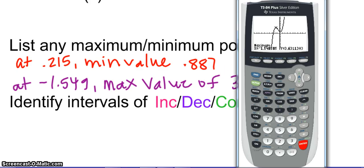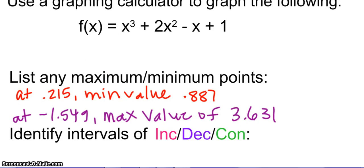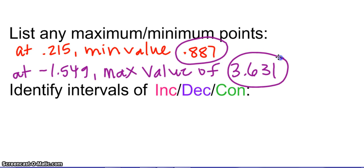I'm getting one more decimal — use three decimals when you can. For the intervals of decreasing, increasing, and constant, I'll leave those to you. But you should know that your turnaround points — where we had our maximums and minimums — are going to create part of your intervals.